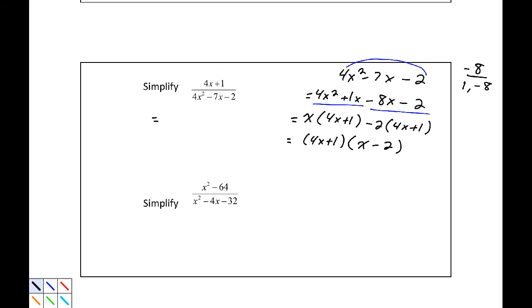So that this becomes 4x plus 1 is my numerator, and in my denominator I have 4x plus 1 in parentheses multiplied by x minus 2 in parentheses. So that this can reduce, here is my 1, 4x plus 1 over 4x plus 1, and I'm left with 1 over x minus 2. And that is a simplified version of that.